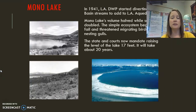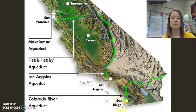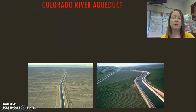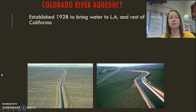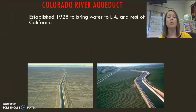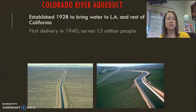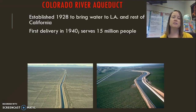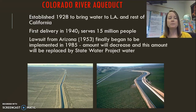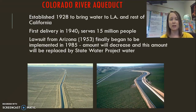The Colorado River Aqueduct carries water from the Colorado River Basin over to San Diego. It is an open-air aqueduct in a very dry region, so some water is lost to evaporation. Built in 1928, it once provided water for LA and other parts of Southern California, carrying water for 15 million people when it first started. In 1953, Arizona had a lawsuit against California over the amount of water being withdrawn, which led to the state water project carrying water from Northern California to Southern California.